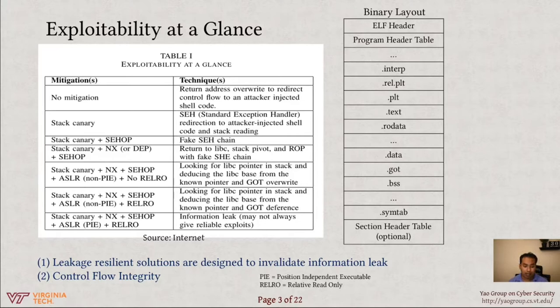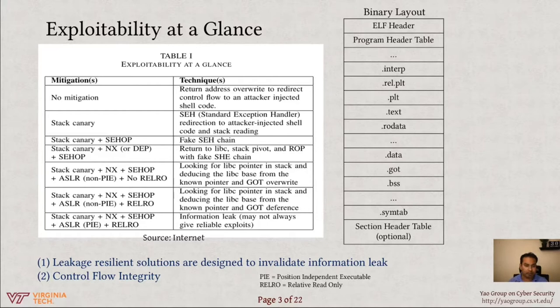Another class of defense is control flow integrity or CFI, which is orthogonal to all leakage-resilience solutions and the other mitigation techniques described. CFI alone can detect all control-oriented attacks. Basically, CFI detects any deviation from the normal flow of a program. For example, in the buffer overflow assignment, you override the return address pointing it to shellcode, so your program's flow jumps into that shellcode — that is a deviation from normal flow, and CFI can detect it.